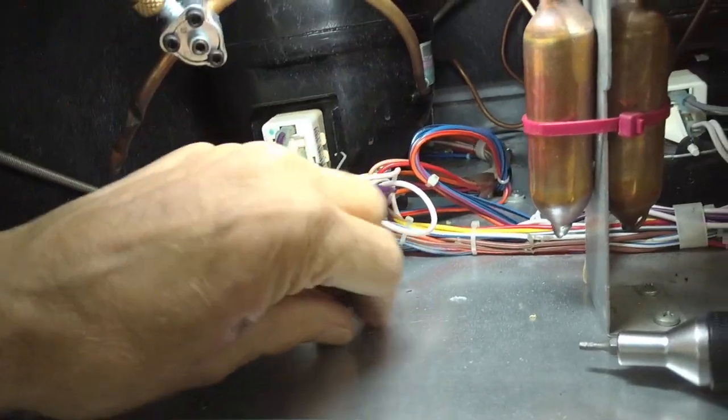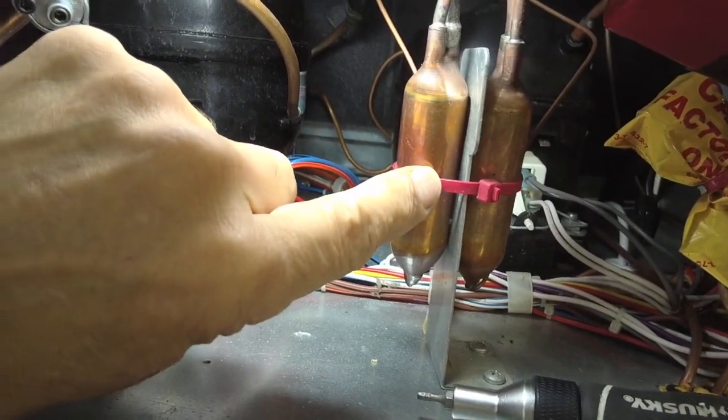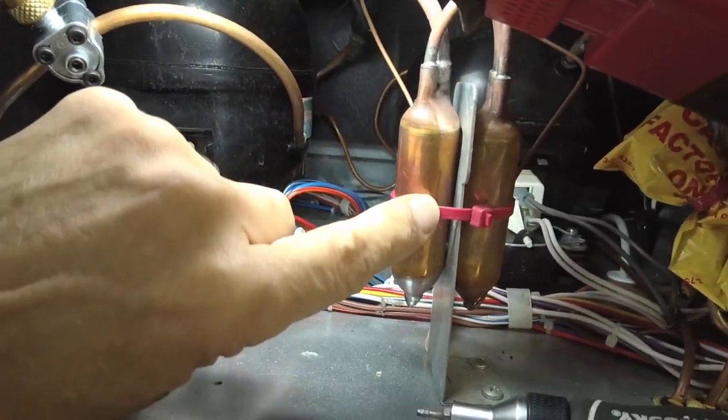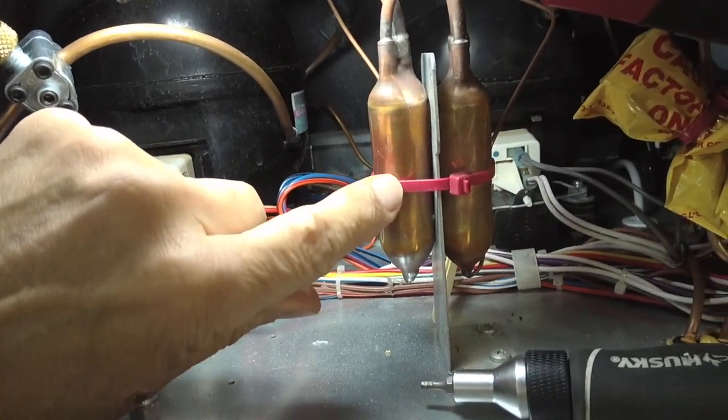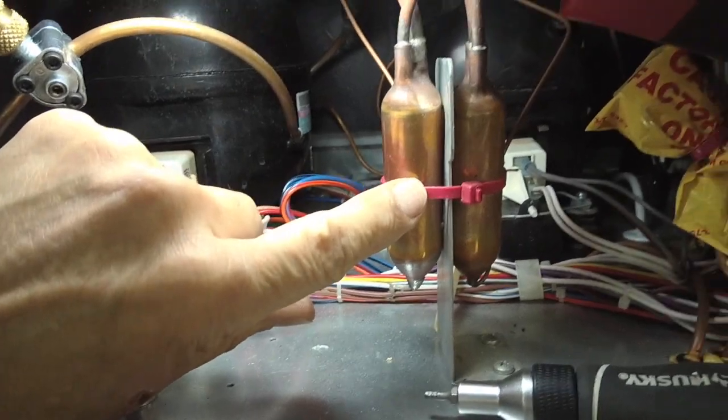After we've taken all the freon out, we're going to cut this dryer out and put a new dryer in here because it's recommended that whenever you go into the sealed system, you replace the dryer. So that'll be our next step.